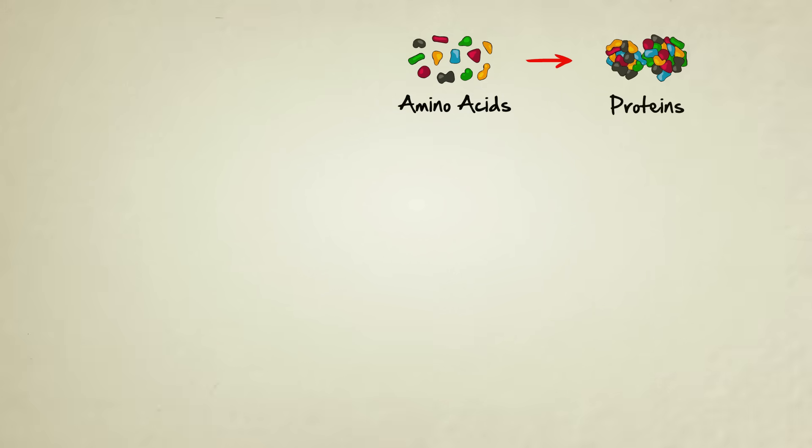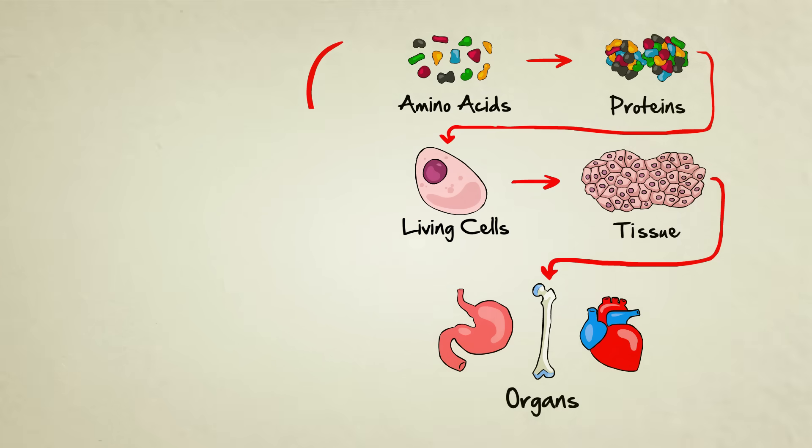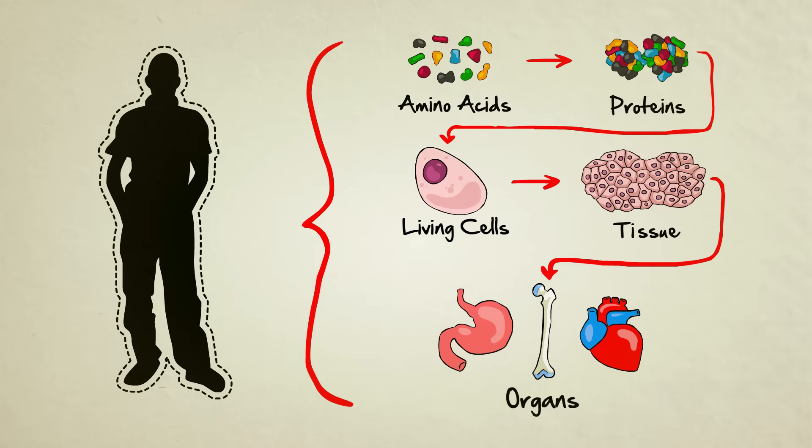Amino acids make up proteins. Proteins, along with other chemicals, combine to form living cells. Cells make up tissues, tissues make up organs, and organs, when they're all put together and functioning of course, combine to form living creatures like you and me.